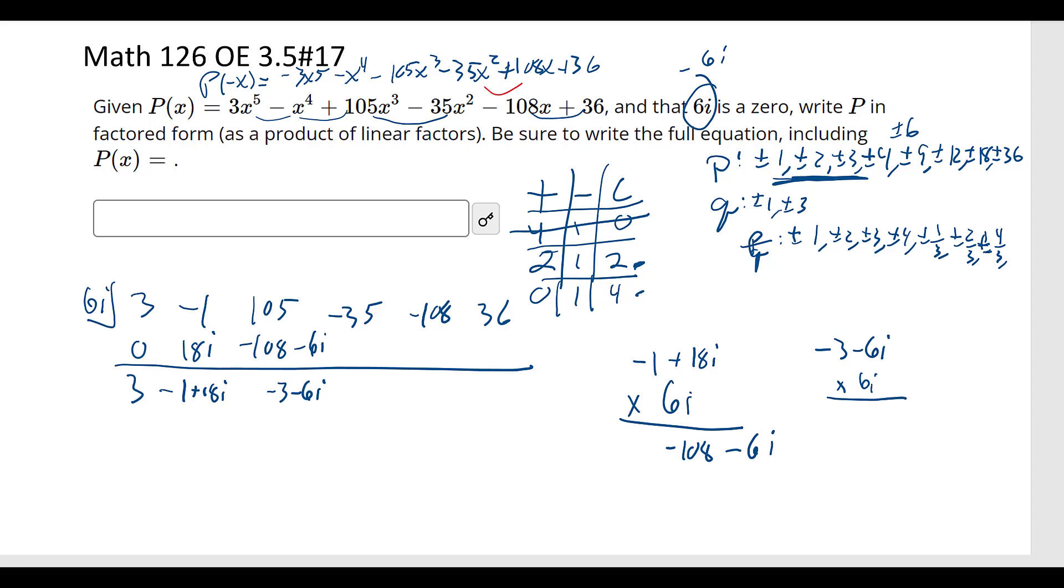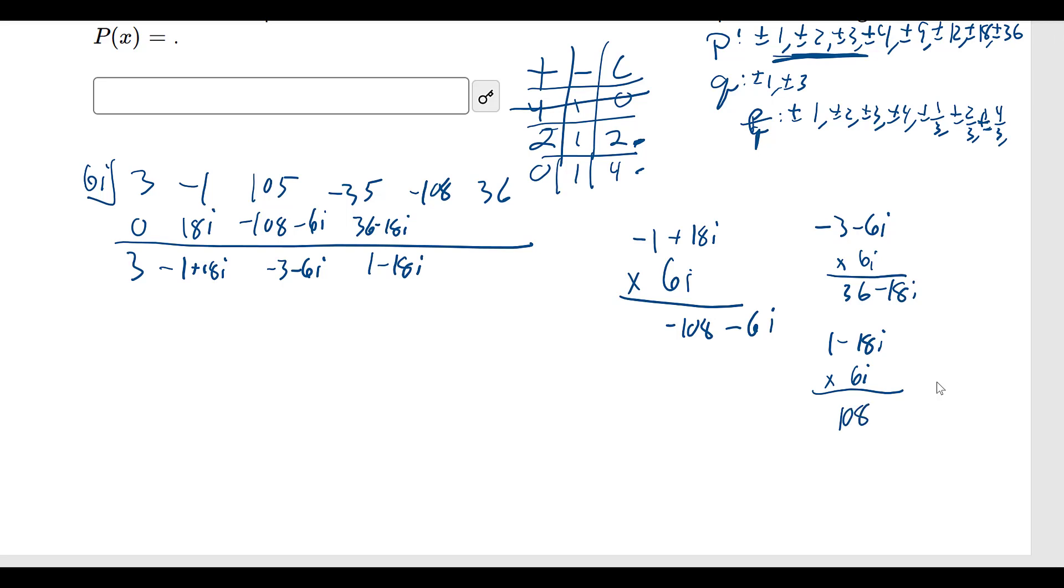So negative 3 minus 6i times 6i. 6i times negative 6i is going to be 36, so negative 36, so negative and negative makes positive 36, and then minus 18i. So we have 36 minus 18i, that gives me 1 minus 18i. And then 1 minus 18i times 6i. This is going to get interesting. Coming down here, we're going to get ourselves that 108, and that's going to be positive because the i squared makes negative 1 and that's negative, so positive. And then plus 6i, so 108 plus 6i gives us just a 6i. And then 6i times 6i is negative 36, so that's 0. Okay, that worked and it was a 0, confirm that.